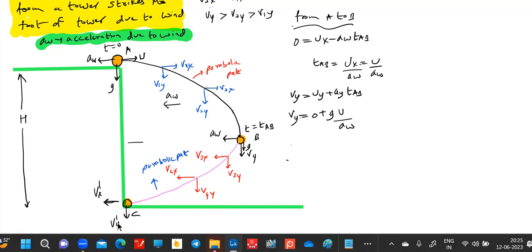It has undergone some horizontal displacement, maximum horizontal displacement. Then can we calculate Xm? Xm will be: zero square minus U square equal to 2 times minus Aw times Xm.